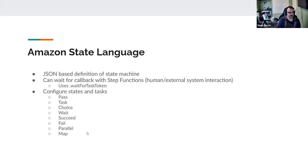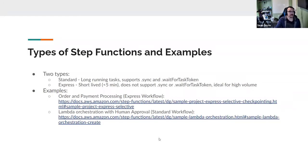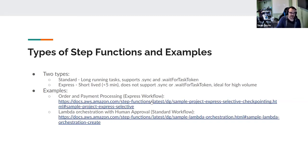There are two types of Step Functions. There's a standard Step Function, which is really for long-running tasks. It supports the sync operation and wait-for-task-token, so it supports external involvement inside the state machine. Express is really for short-lived, high-volume running tasks — there's a limit on state transitions per second for standard, but no limit on express. This is ideal for things like IoT or streaming data, where you'd have a lot of fast state machines executing.